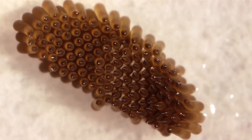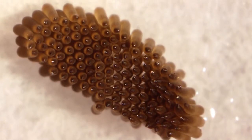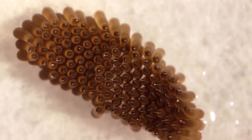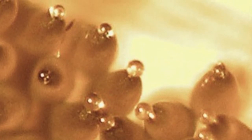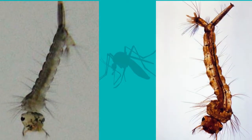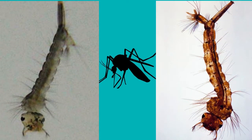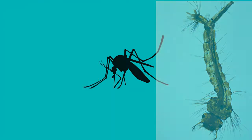Each raft consists of 300 eggs. Depending on the temperature, Culex develops from eggs to adults in 7 to 14 days. After eggs become larvae, the larvae of Culex are vertical in position, long in length, and narrow. The respiratory siphon is very long compared to other mosquitoes.